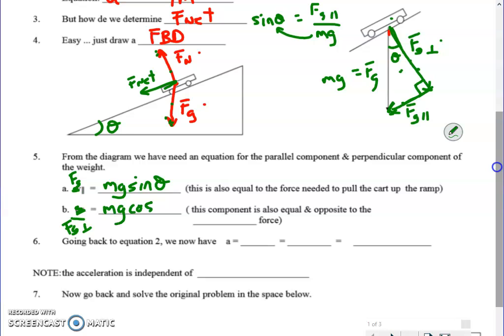If I do the same thing with Fg perpendicular, then this is the component I see it's adjacent to the theta so I would say that Fg perpendicular is equal to the weight times the cosine of the angle. For the same reason, cosine of the angle is adjacent divided by the hypotenuse.